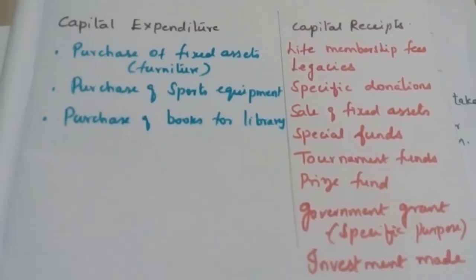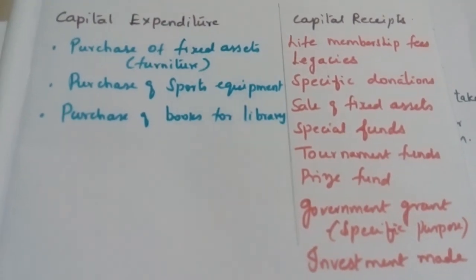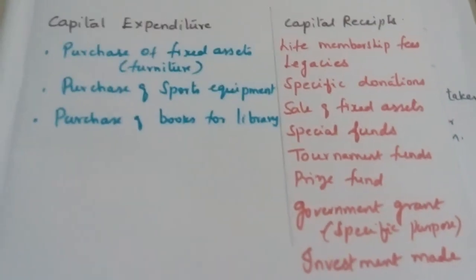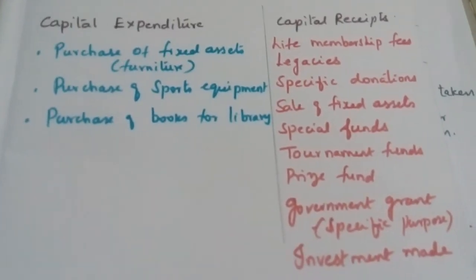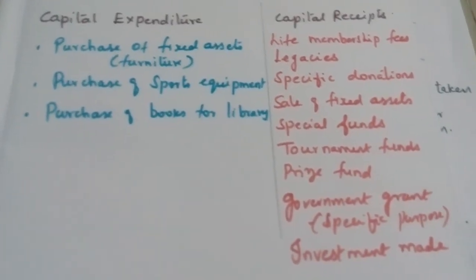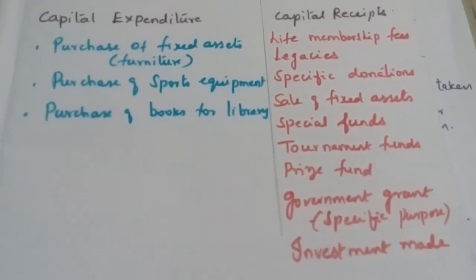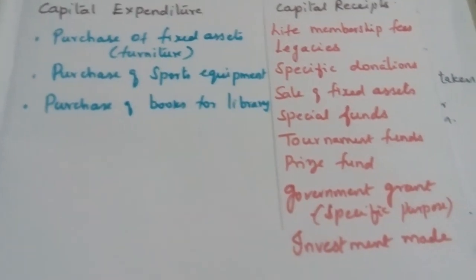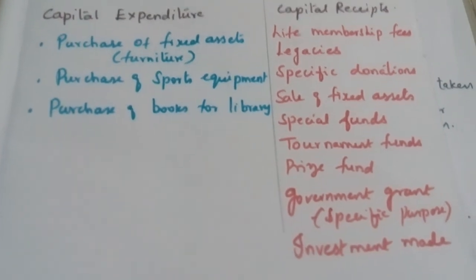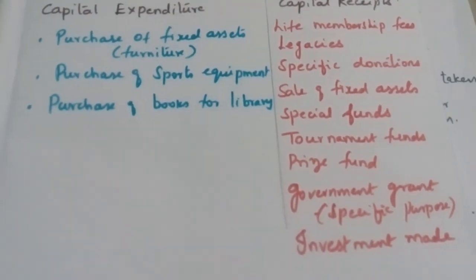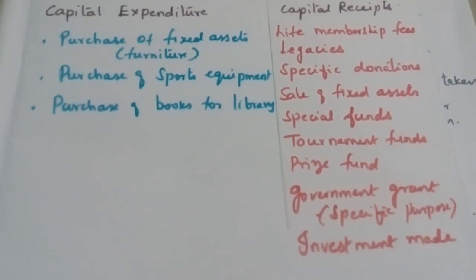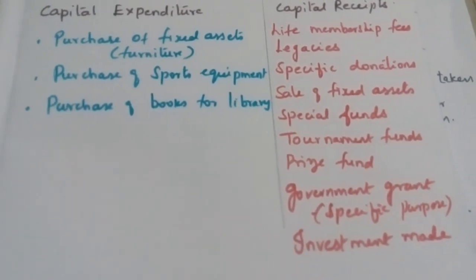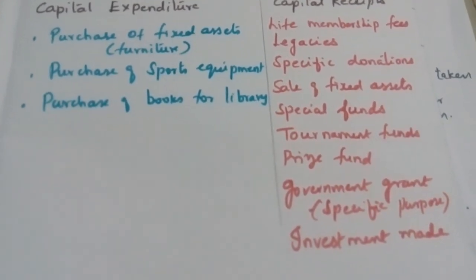If these items are excluded, then the rest will be shown in the income and expenditure account. Hope you are clear with this. In the next module, we will go for the sums. Thank you.